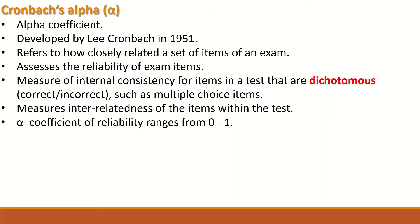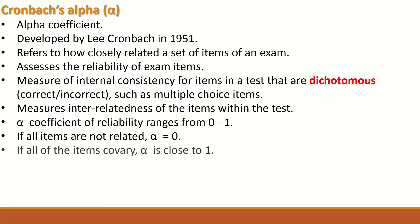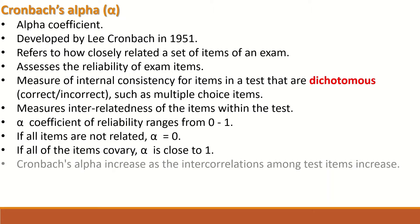The alpha coefficient of reliability ranges from 0 to 1. If all the items are not related, then alpha will be equal to 0. And if all of the items co-vary — i.e., are related — then alpha is close to 1.